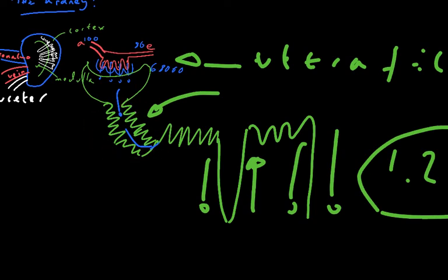We have the proximal convoluted tubule which is where selective reabsorption of all of the good stuff that you want to keep occurs. Then we have the descending limb of the loop of Henle, the ascending limb of the loop of Henle, which is about generating the ion gradient into the medulla.